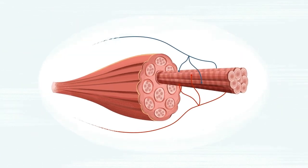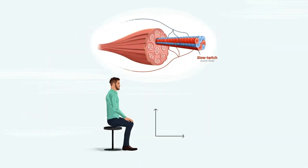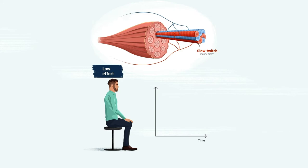There are two types of muscle fibers, slow and fast twitch. With a low effort, such as getting up from the chair, only slow twitch fibers get activated.